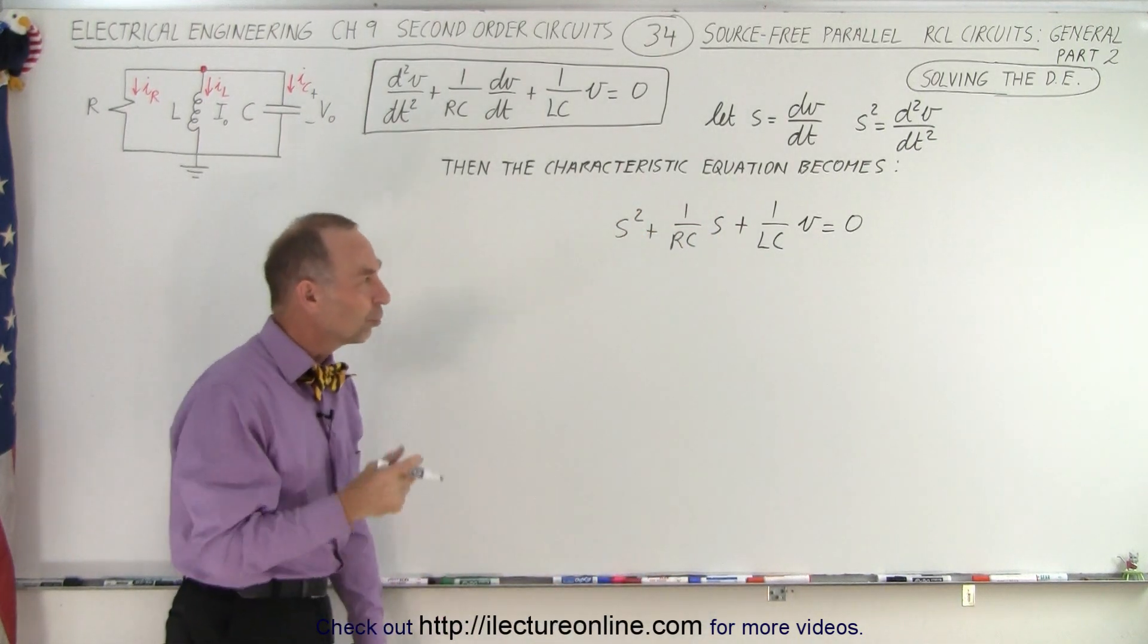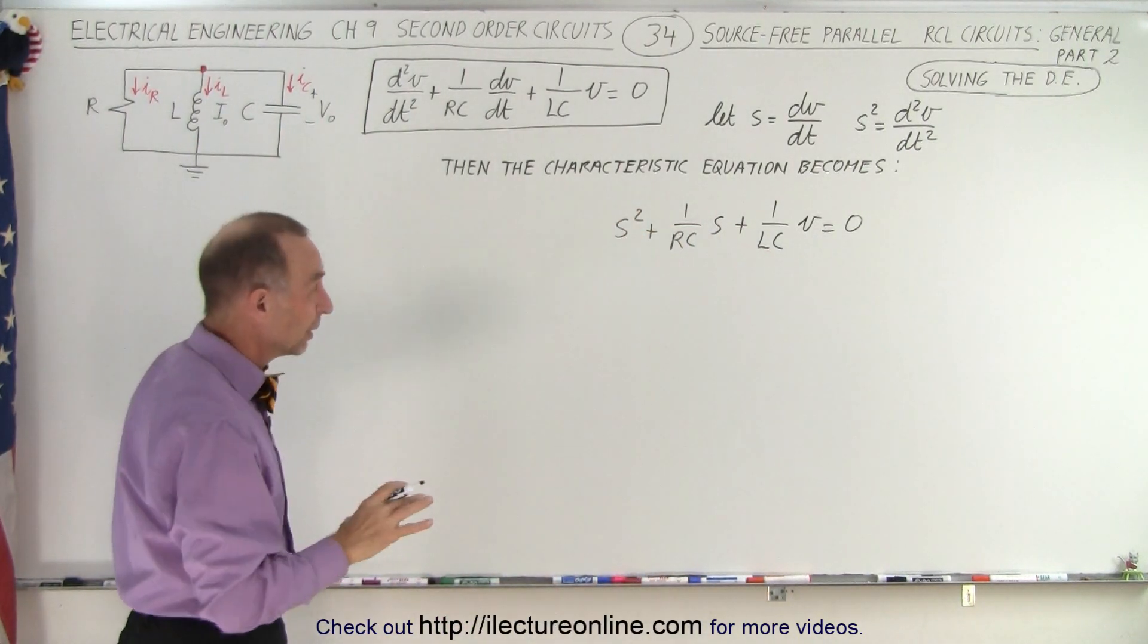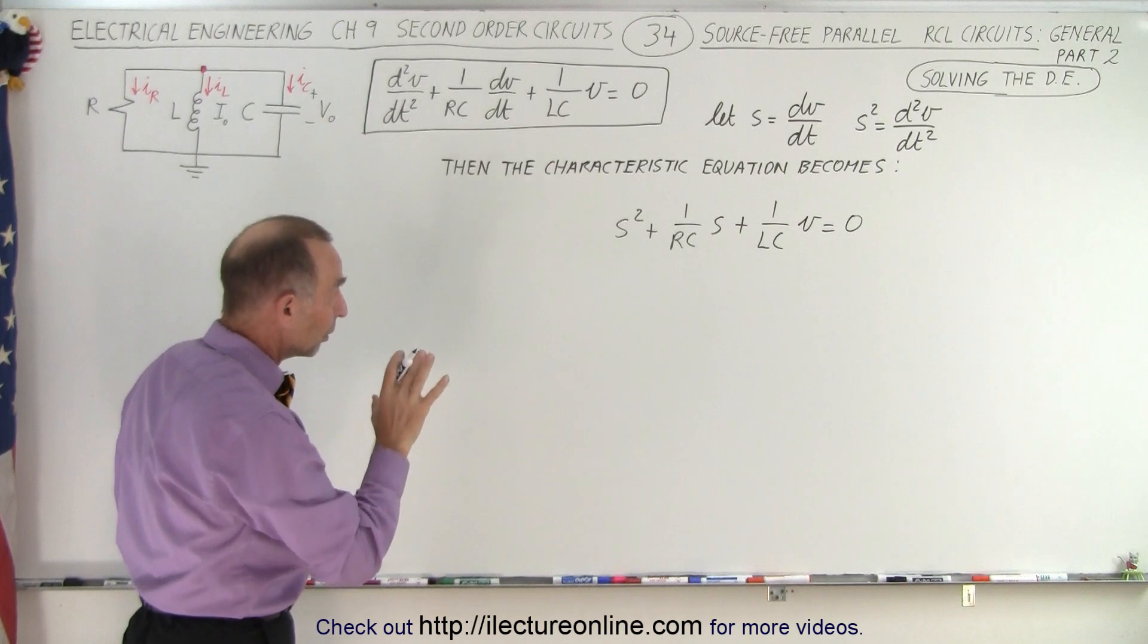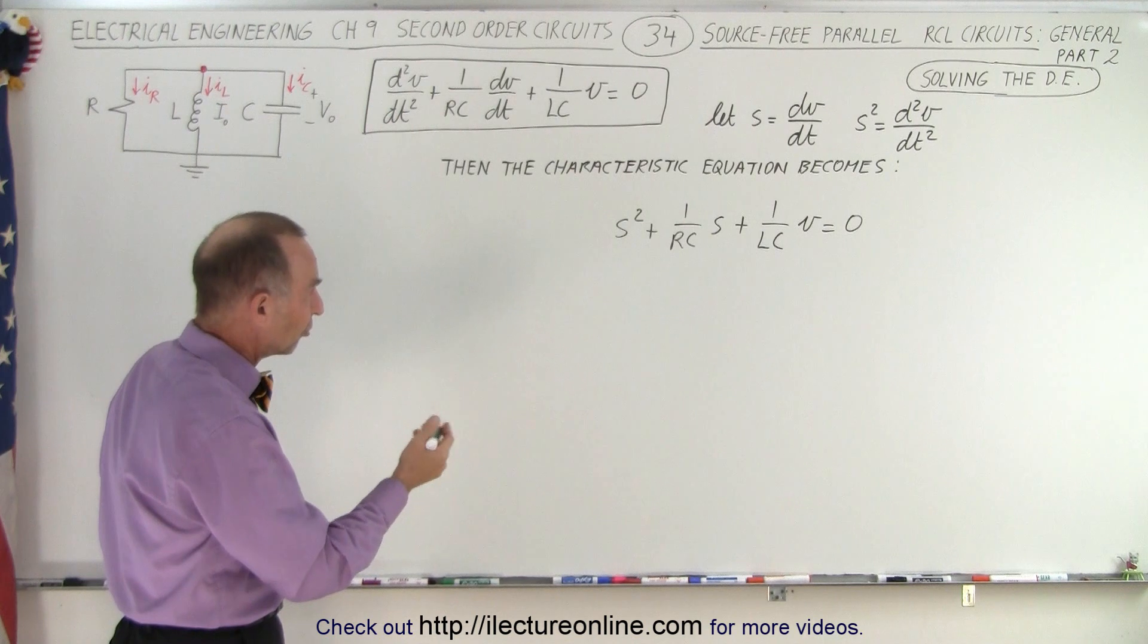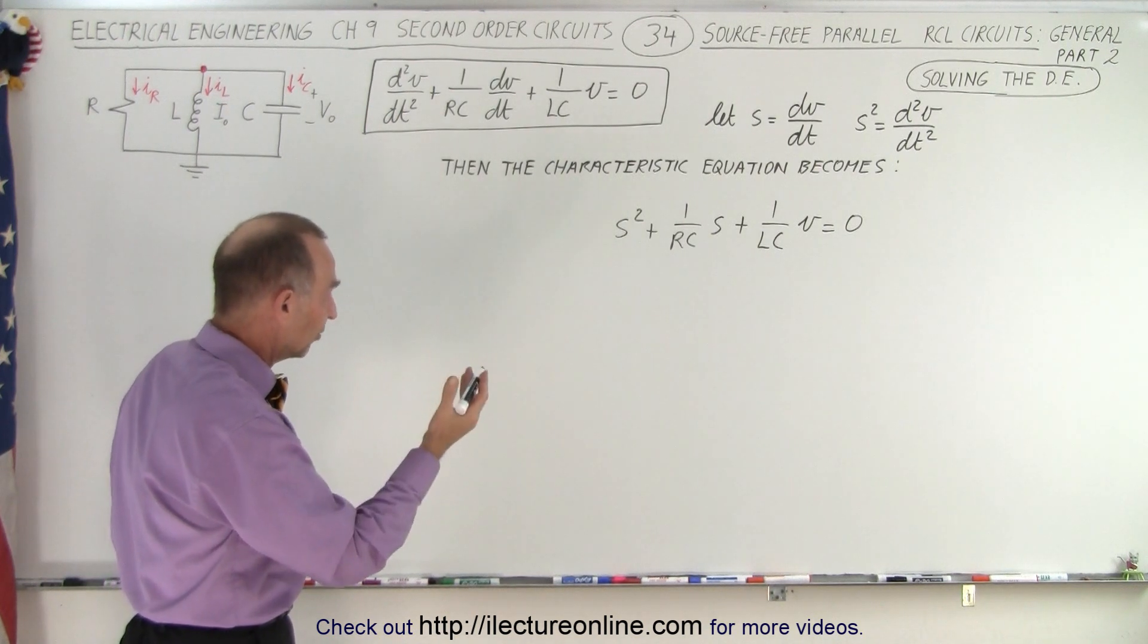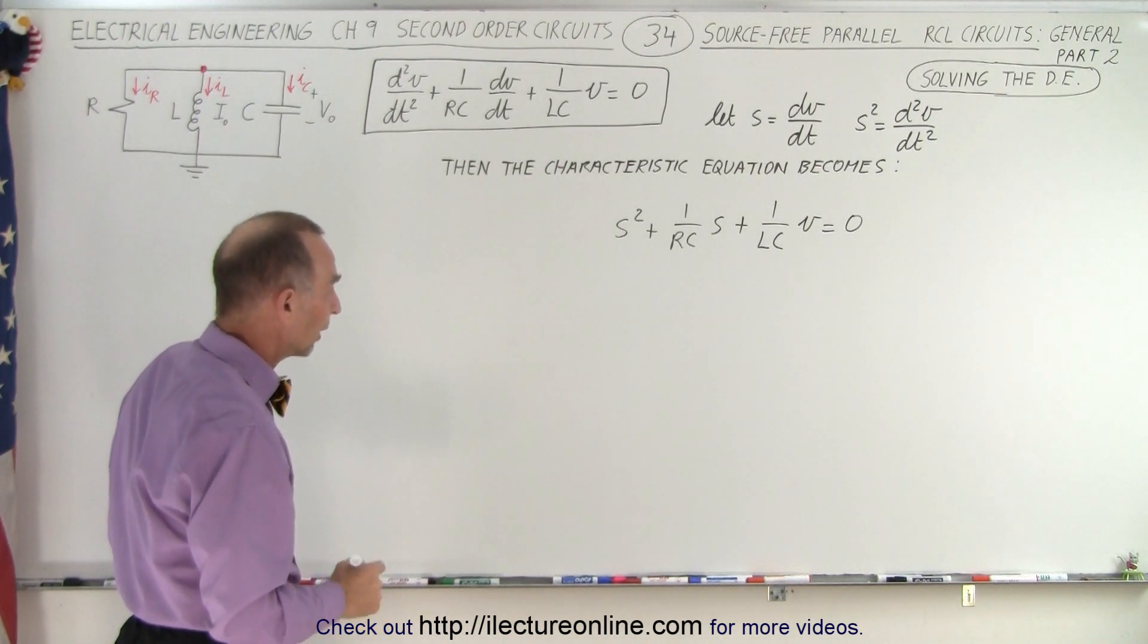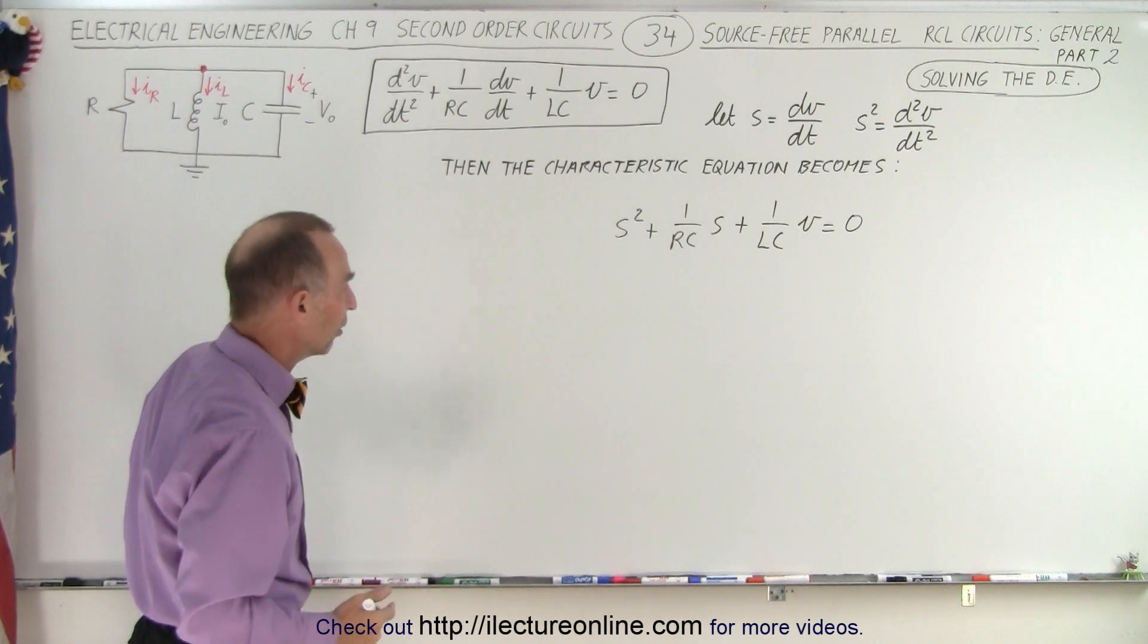Now, where does this 1 over LC come from? Well, obviously from the equation, but there's another meaning there, and we'll get to that meaning in just a moment. So what this looks like now is a simple second-order quadratic equation, and we can solve it as such.